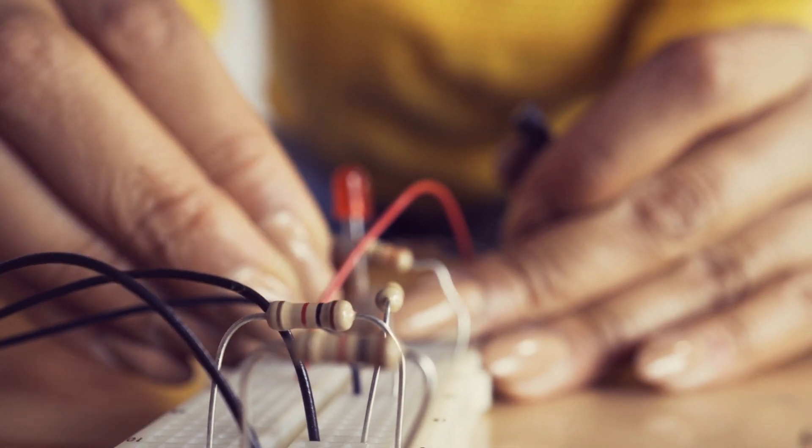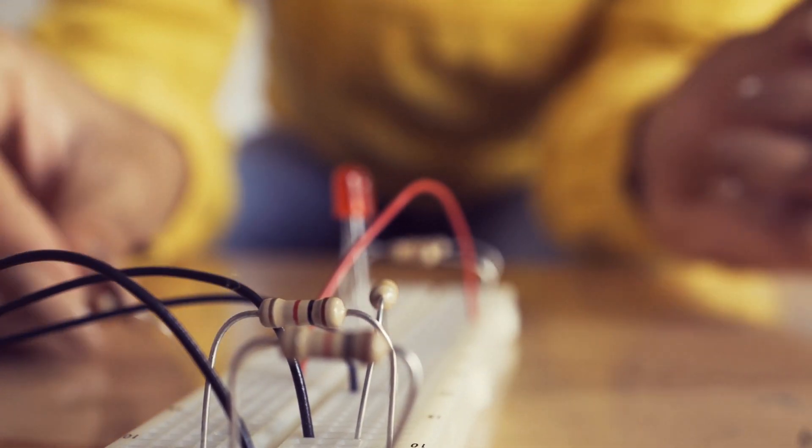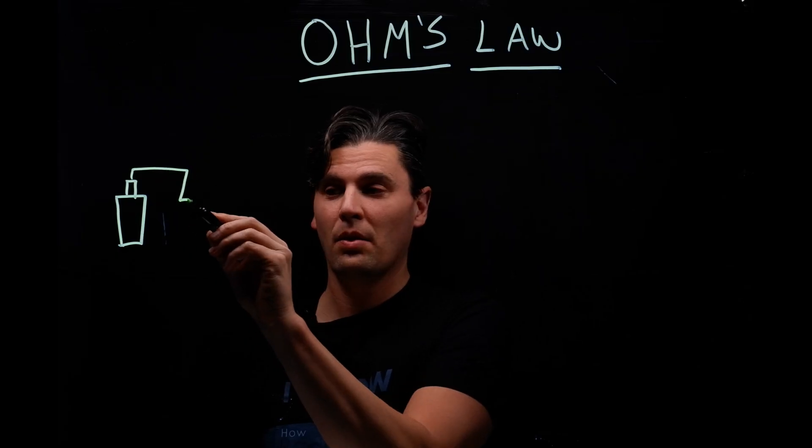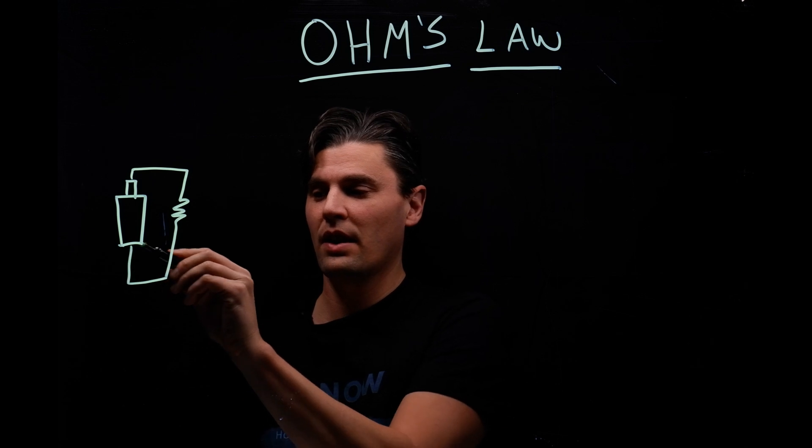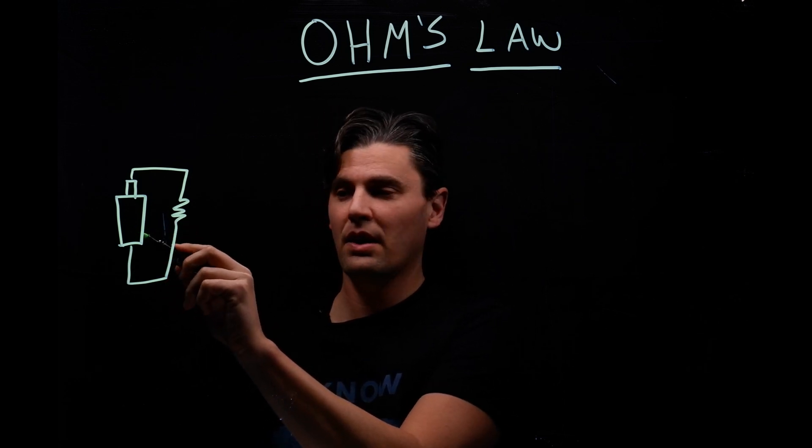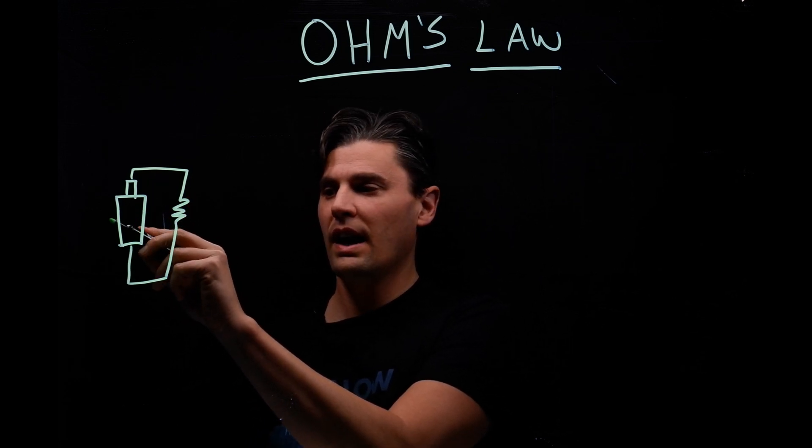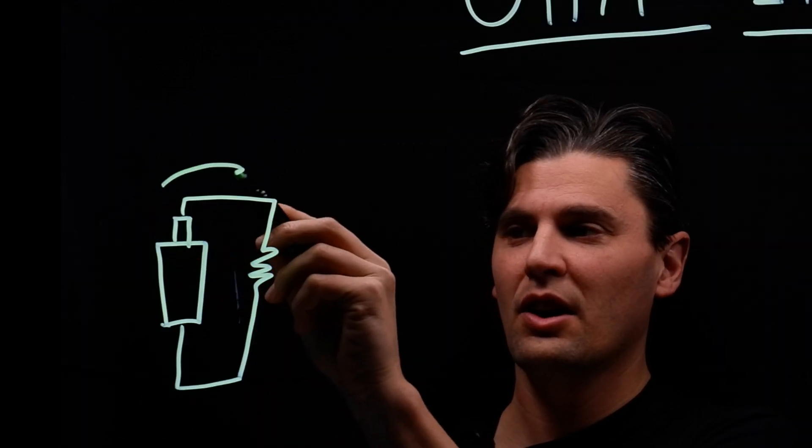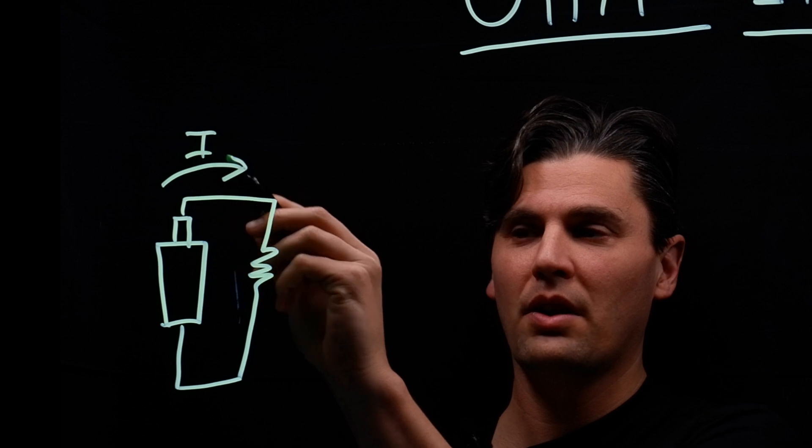So like we've talked about before, you have a basic circuit where you have a battery or alternating current. But here I'm just showing a battery, so like a DC current. We have a video on AC versus DC if you're interested in that. Usually the current we'll draw is going in one direction.